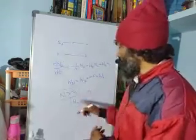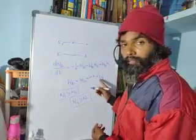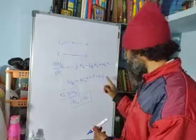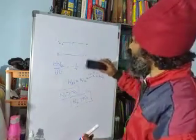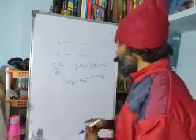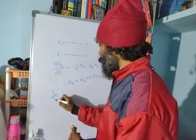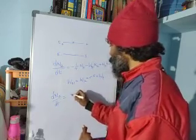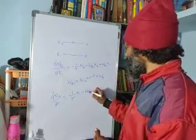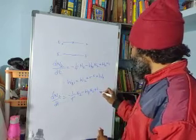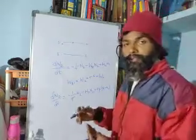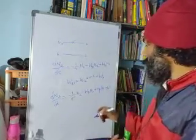To overcome the natural Boltzmann condition, we use a process called pumping. Replacing W12 and W21 with Wp in the rate equation, we write dn2/dt = −(1/τ)·n2 − Wp·n2 + Wp·n1. Substituting n1 = N − n2 (since N = n1 + n2), we get dn2/dt = −(1/τ)·n2 − 2·Wp·n2 + Wp·N.